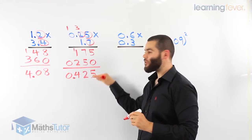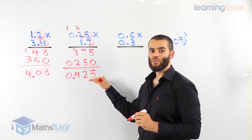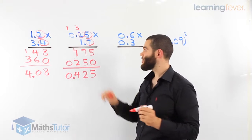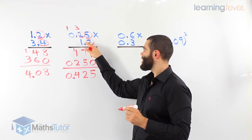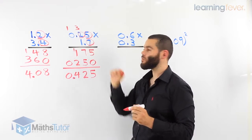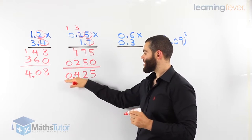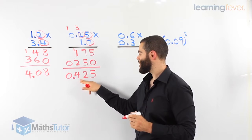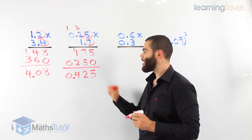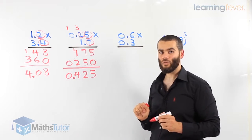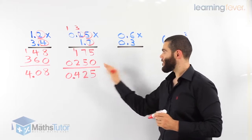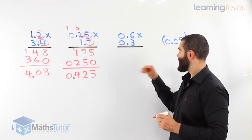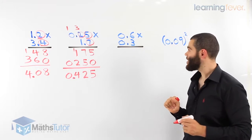We complete our multiplication as normal, then go back and ask ourselves how many decimal places there are: 1, 2, 3 decimal places in the question. That means there have to be 3 decimal places in the answer: 1, 2, and 3. Hopefully the picture has become clearer. Let's look at the next one.